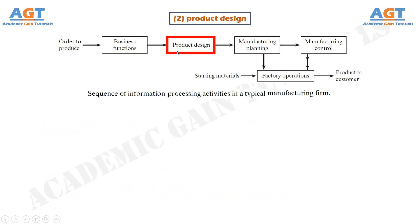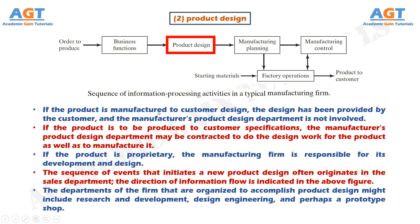If the product is manufactured to customer design, the design has been provided by the customer and the manufacturer's product design department is not involved. If the product is to be produced to customer specification, the manufacturer's design department may be contracted to do the design work as well as manufacture it. If the product is proprietary, the manufacturing firm is responsible for its development and design. The departments organized to accomplish product design might include research and development, design engineering, and perhaps a prototype shop.